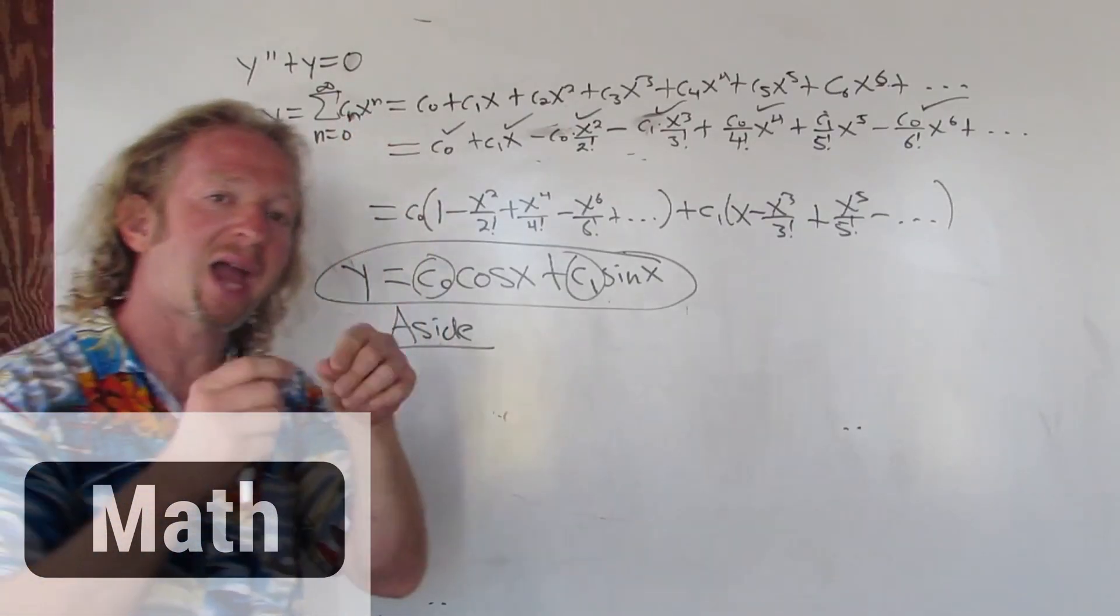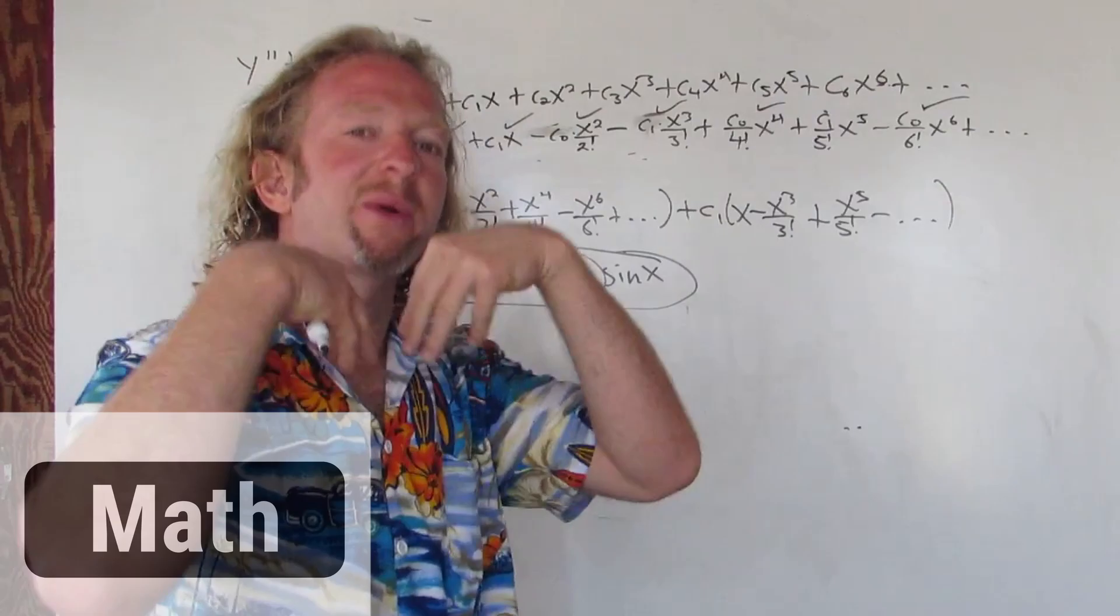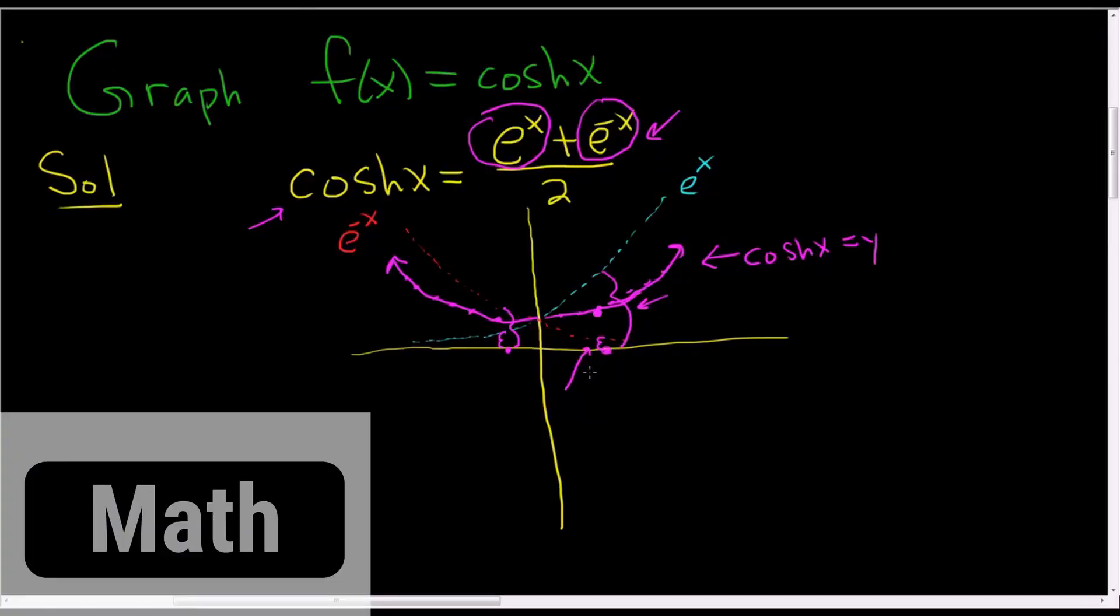The coefficients from the power series actually end up being your arbitrary constants in the problem. Just a neat way to think about the graph, right? It's the average of e to the x and e to the negative x.